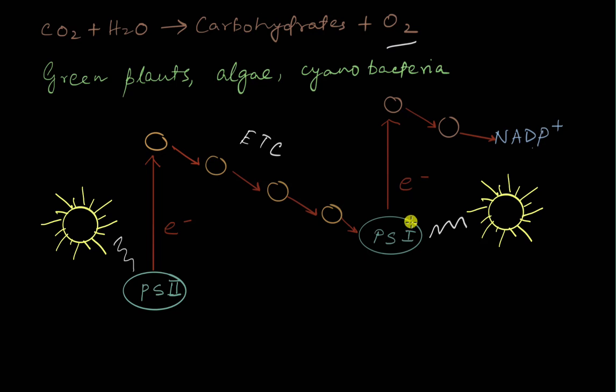So when electrons are lost by photosystem 1, an electron gap is created which is filled by the electrons coming from photosystem 2 which also lose their electrons because of the photons coming from the sun. So the electrons eventually end up going to NADP which gets converted to NADPH.